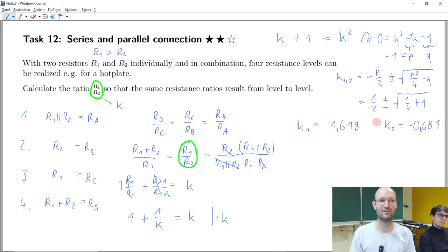You cannot have a negative resistance, but if we would have a negative ratio between two resistances, it would mean that one of the resistances must be negative. And this does not make sense.